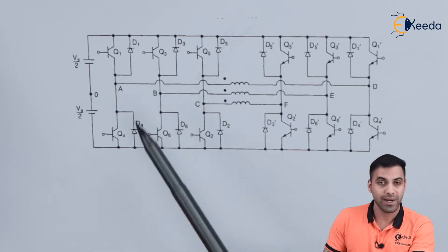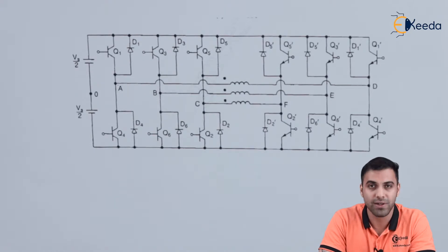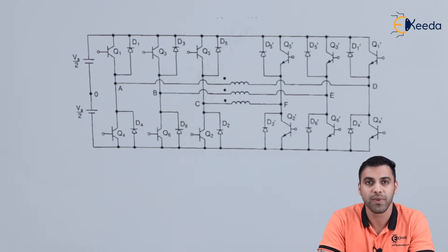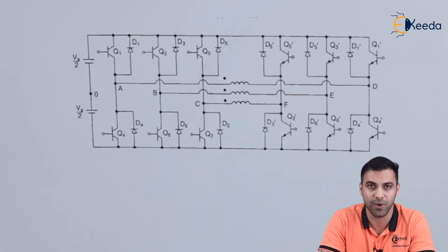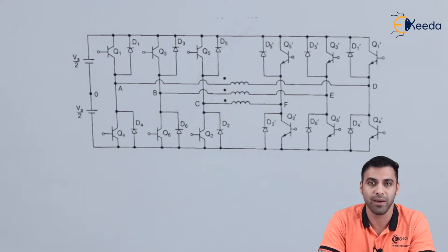I can operate the transistors in different time modes so that I can get the alternating output voltage. There are 3 modes of operation of a 3-phase inverter: mode 1, mode 2, and mode 3. There are different R loads connected across the output, giving 3 voltages across 3 R loads. Considering 3 different resistive loads across the output terminals, there are 3 modes of operation.